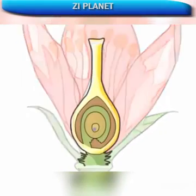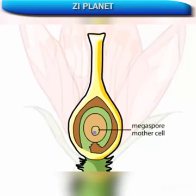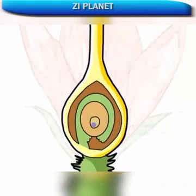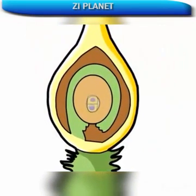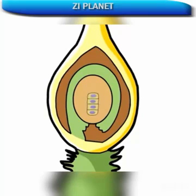The ovule contains a reproductive cell called the Megaspore mother cell, or Megasporocyte. This cell is diploid and undergoes meiosis to produce four haploid Megaspores. In most species, three degenerate, leaving one surviving Megaspore.